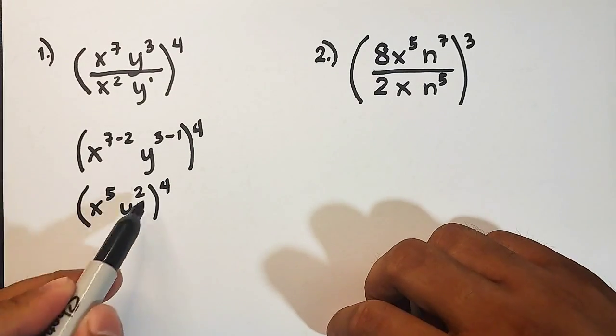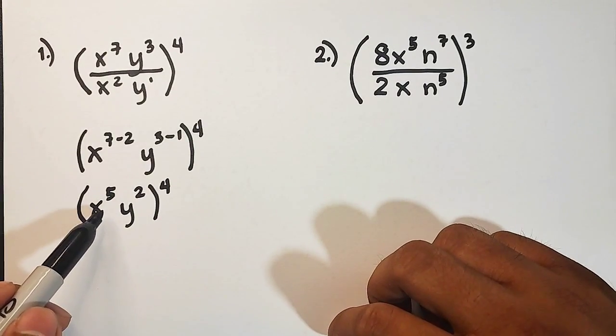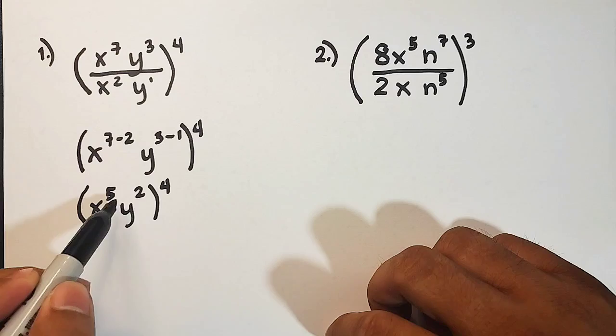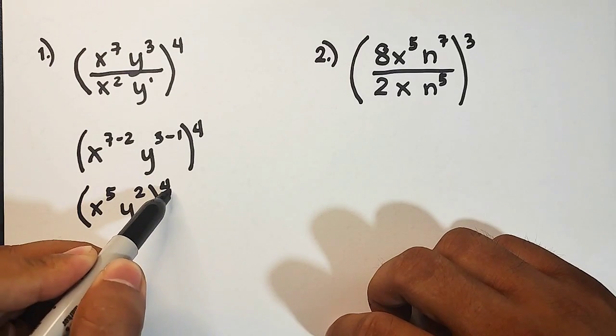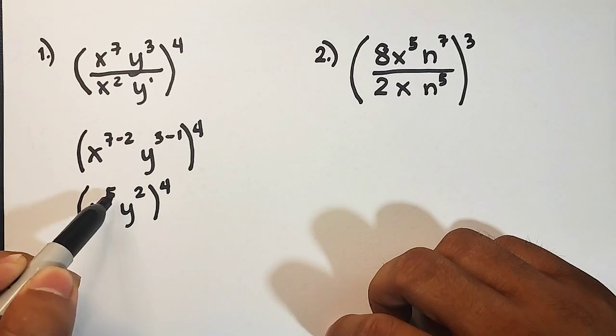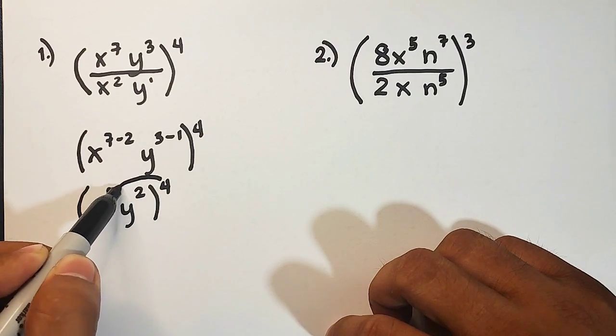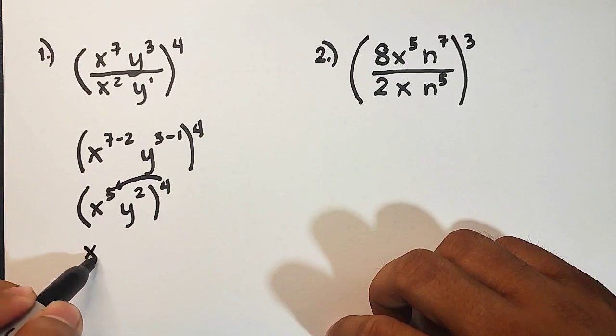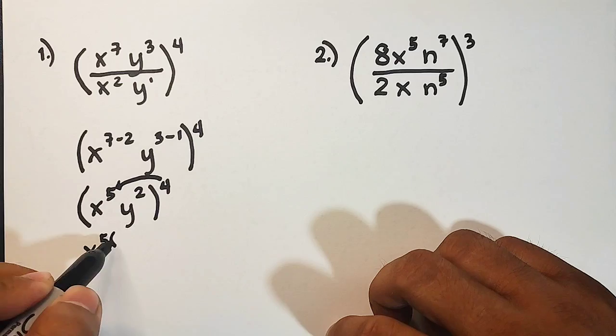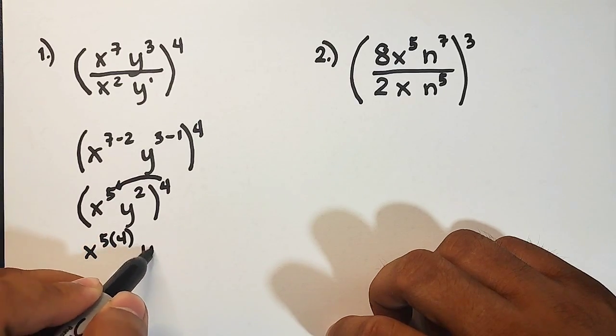So what will happen here guys, in this rule, you have to use the power of power. What will happen is that this outside exponent will be multiplied by the exponents in the variable inside. So you will distribute it like this one. x raised to 5 times 4, then y